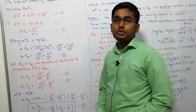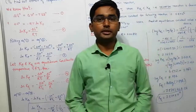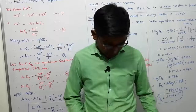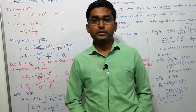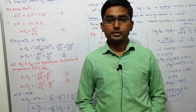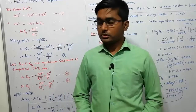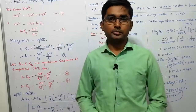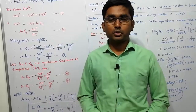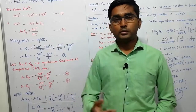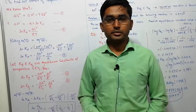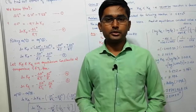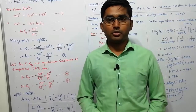This Van't Hoff equation describes the variation of equilibrium constant with temperature. This is the last session of the chemical equilibrium chapter. From tomorrow we will start the third chapter, that is ionic equilibrium. Thank you for watching.